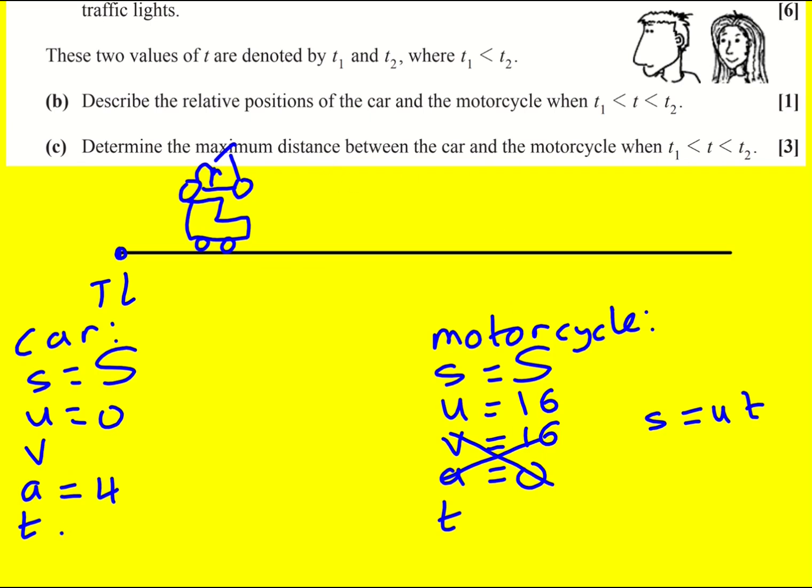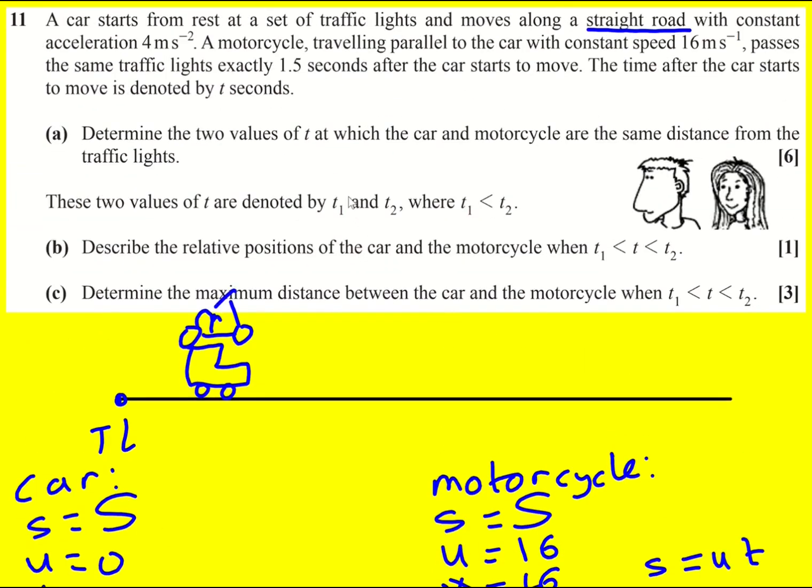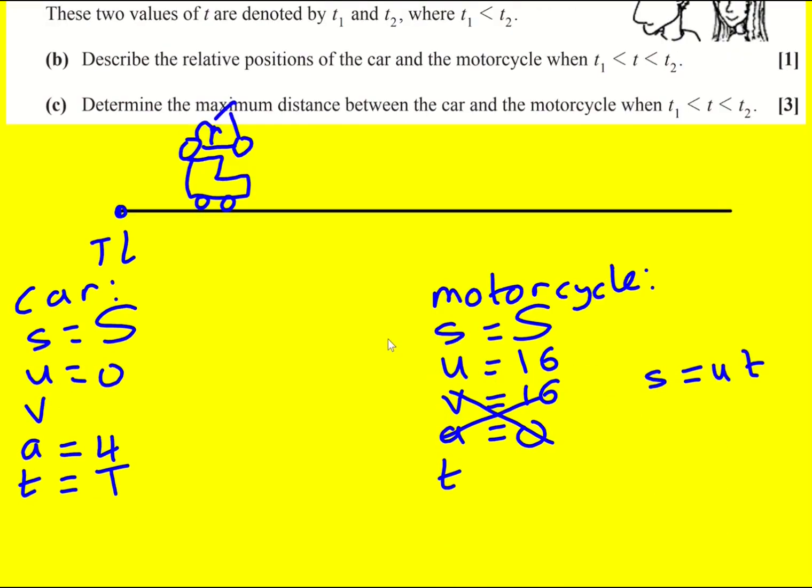Because then we can put it into both sets of SUVATs. And I want to know the time, so for the car I'm going to call it capital T. Now this is the hardest bit of the question, probably, working out what to write for the motorcycle. Because it passes the traffic lights exactly 1.5 seconds after, it's like its clock is just 1.5 seconds slower. So the t is actually capital T minus 1.5.